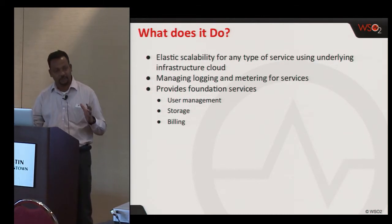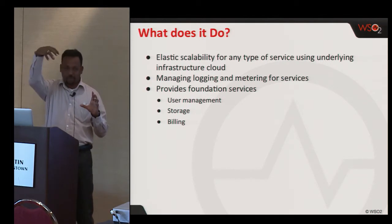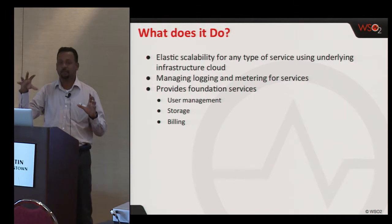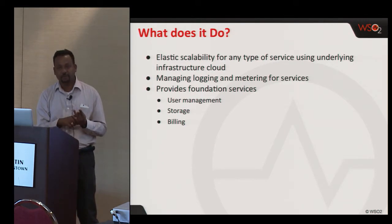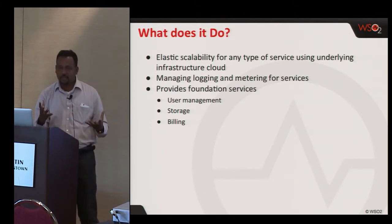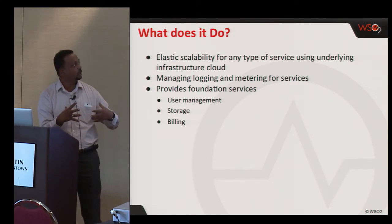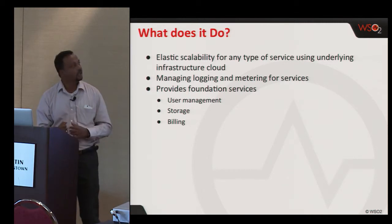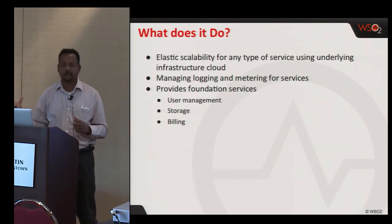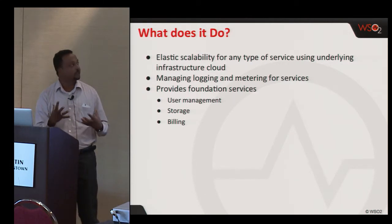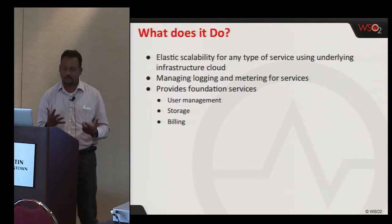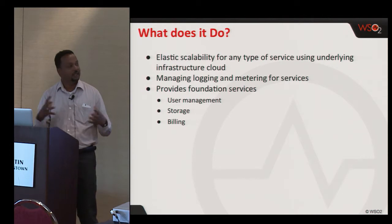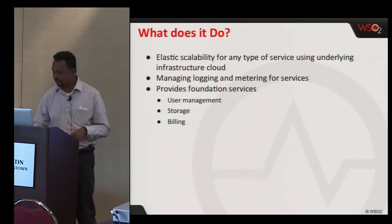You plug in whatever infrastructure service you have, use Apache Stratos, and bring in services to be automatically scaled. When I say services, we mean things such as application frameworks, application servers, programming language frameworks, databases, et cetera. Because it is a framework, you get automatic management of logging and metering services. It also has foundation services such as user management, storage, and billing — which are expected out of a PaaS — so that you can manage these across services in a unified manner.